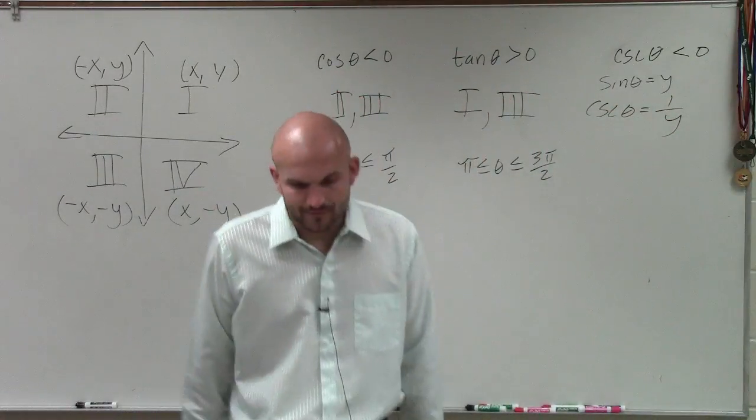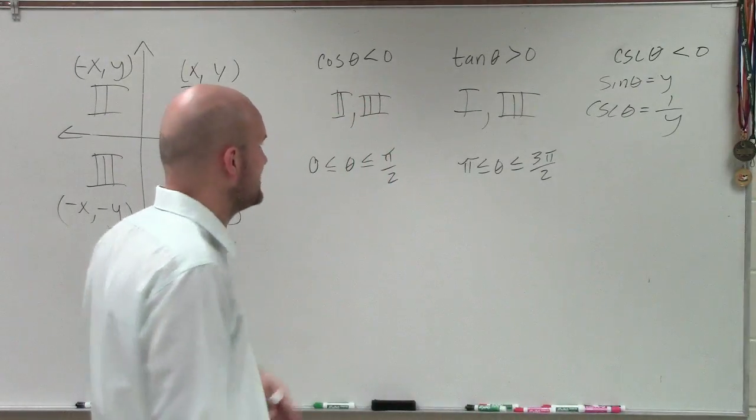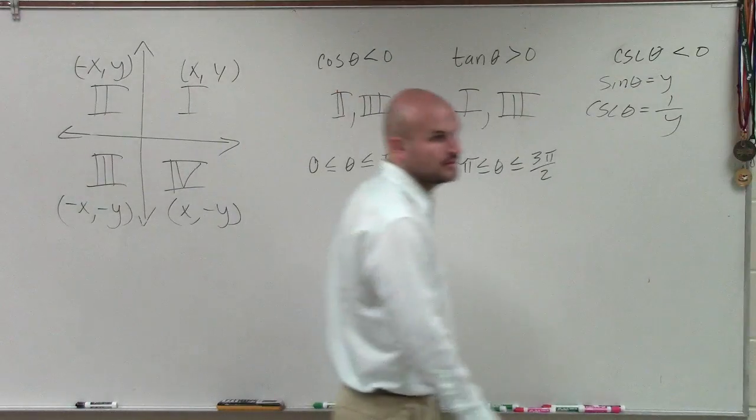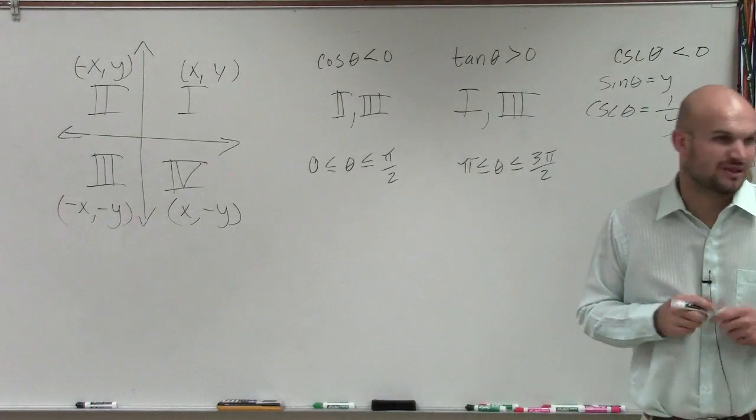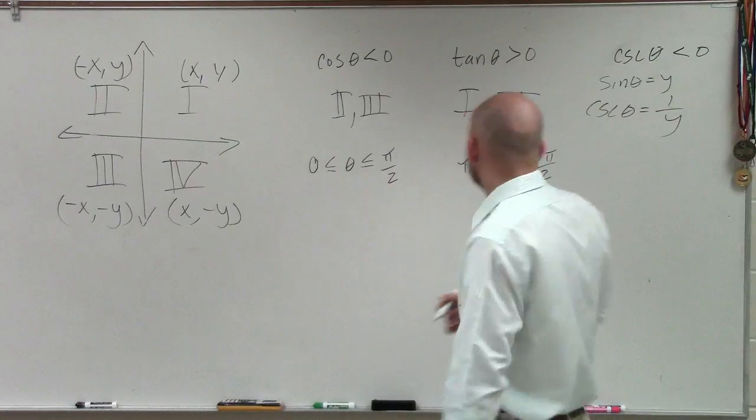So Brittany, when is the cosecant of theta going to be negative? What quadrants? Which quadrants will 1 over y be negative, or less than 0? When will 1 over y be less than 0? 3 and 4. Very good.